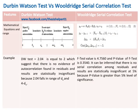Example of the Durbin-Watson test: the DW test statistic is equal to 2.04, which is approximately equal to 2. This suggests that there is no evidence of autocorrelation found in the residuals, and the results are statistically insignificant because 2.04 falls in the range of Du and 4 minus Du.